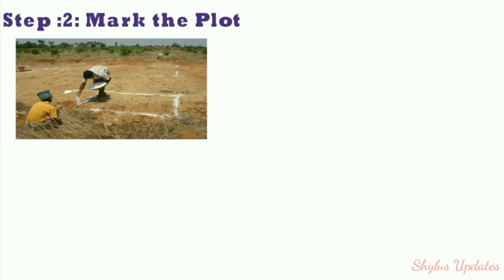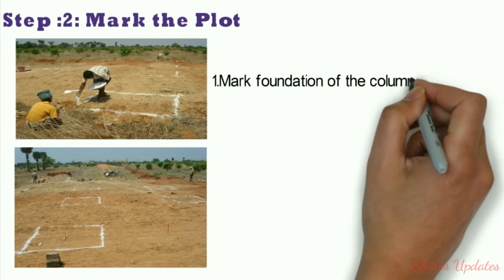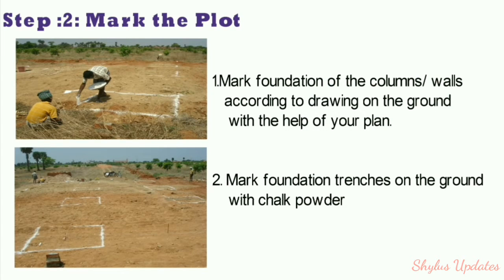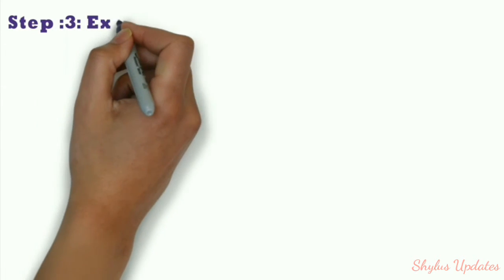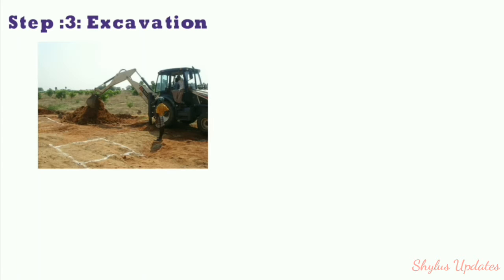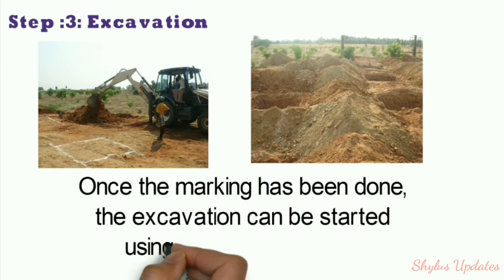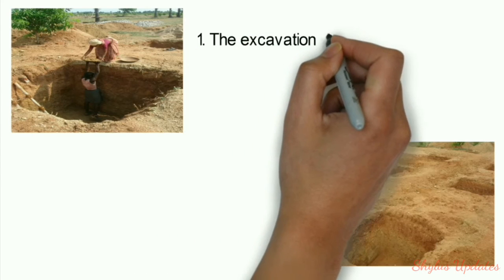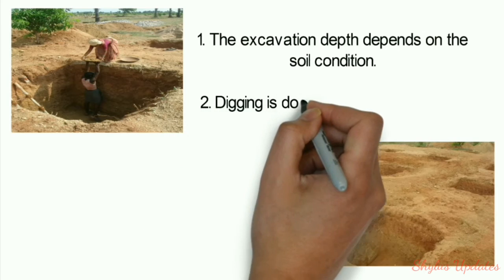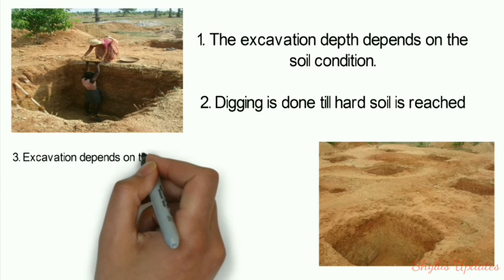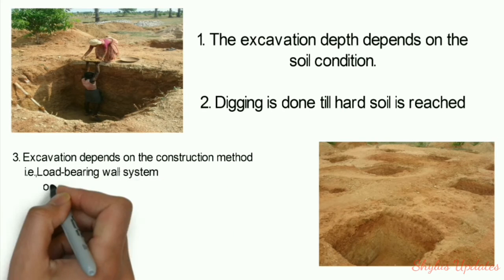Step 2: Mark the plot. Mark the foundation of columns or walls according to the drawing on the ground with the help of your plan. Mark foundation trenches on the ground with chalk powder. Step 3: Excavation. Once marking is done, excavation can be started using a bulldozer. Excavation depth depends on soil condition and is done until hard soil is reached. Excavation method depends on the construction type — load bearing wall system or column-beam frame structure system.